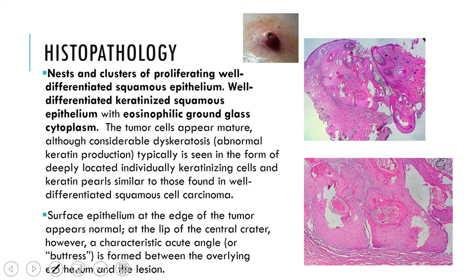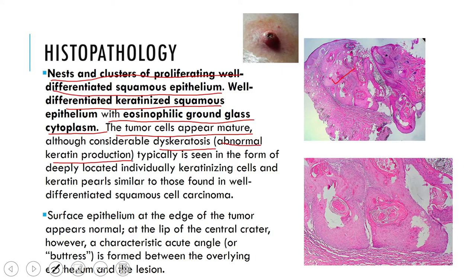There are nests and clusters of proliferating well-differentiated squamous epithelium. These well-differentiated squamous epithelial cells have an eosinophilic ground-glass cytoplasm. The tumor cells appear mature, although there is presence of dyskeratosis — that is, abnormal keratin production. Normally keratin production occurs only at the outermost layer, but here keratin formation occurs even in the deeper layers. Keratin pearls and individual cell keratinizations are seen at the deeper layer. This is one of the features of squamous cell carcinoma, which is why it can be confused with it.